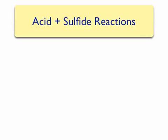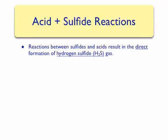The first class is between an acid and a sulfide, or the S²⁻ ion. Reactions between sulfides and acids will result in the direct formation of hydrogen sulfide gas, or H₂S.